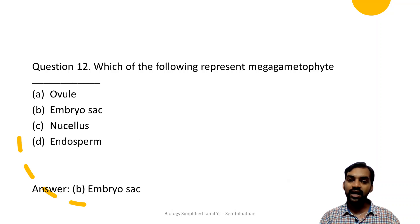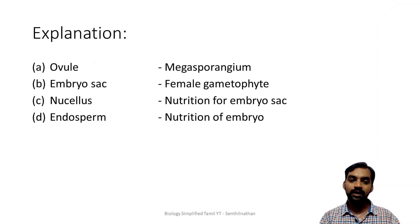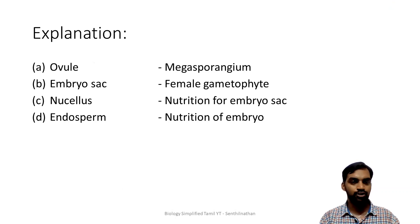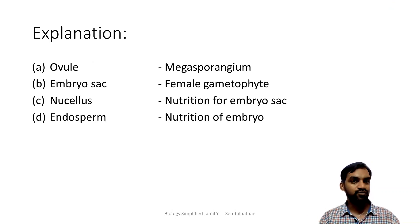Which of the following represents the mega gametophyte? Mega means female, micro means male. The female gametophyte is the embryo sac. The relationship is: ovule contains megasporangium, which contains the embryo sac - the female gametophyte or mega gametophyte. The nucellus is nutritive tissue for the embryo sac pre-fertilization; endosperm is nutrition for the embryo post-fertilization.